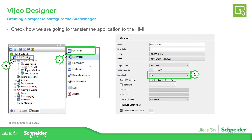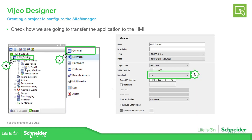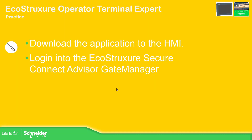Once we have that, what we need to do is go to General and select USB to download to the target. Here you have the possibility to download — you select the way you want to transfer to the HMI. In this case we're going to use USB, then download to the target.